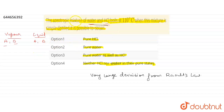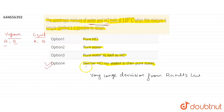So, we cannot obtain pure water or pure HCl from an azeotropic mixture once an azeotropic composition is reached by simple distillation. Therefore, option four is the correct answer: we cannot separate neither HCl nor water in their pure states.